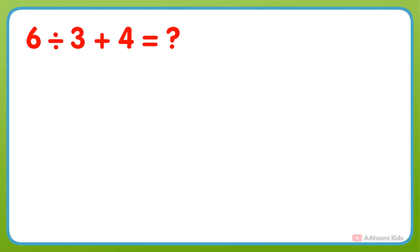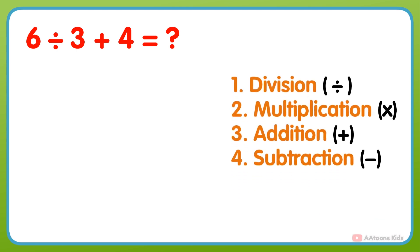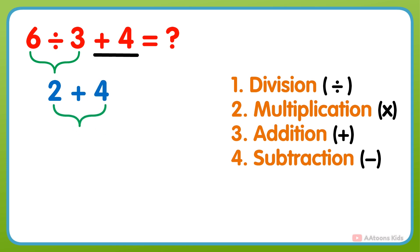What is 6 divided by 3 plus 4? In this problem, two operations — division and addition — are given. So according to the order, we would first perform the division: 6 divided by 3 gets 2. And next, add 4 to the result, and you will get your answer: 2 plus 4 equals 6.